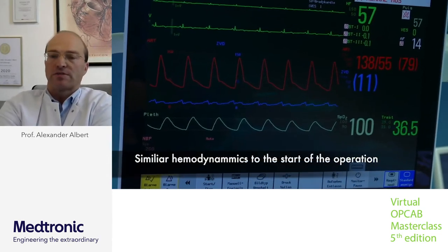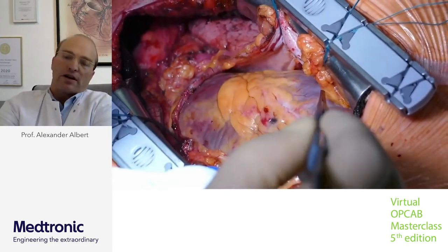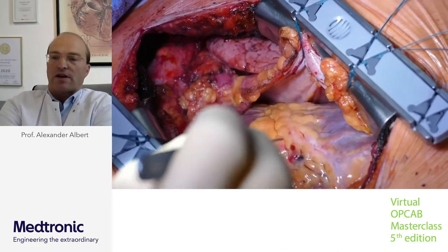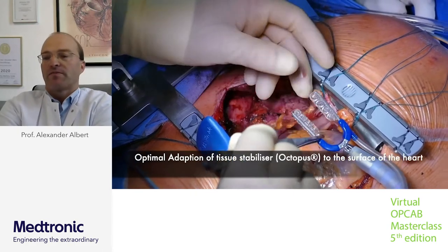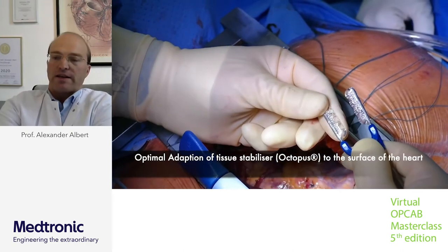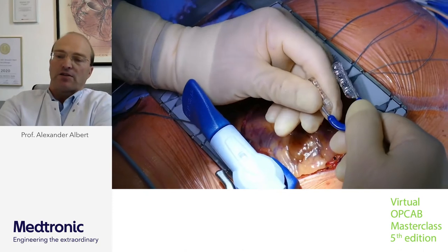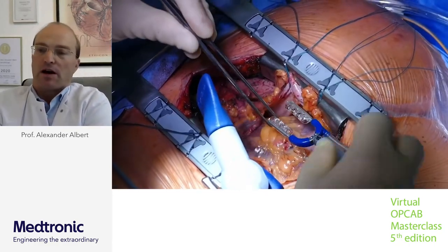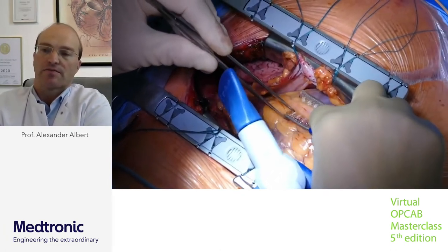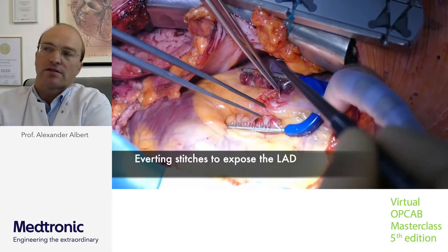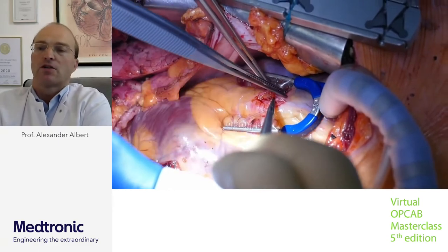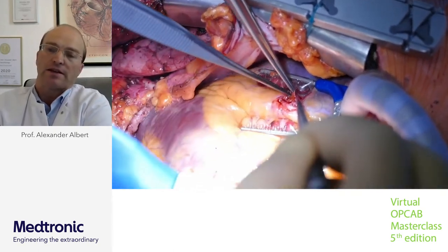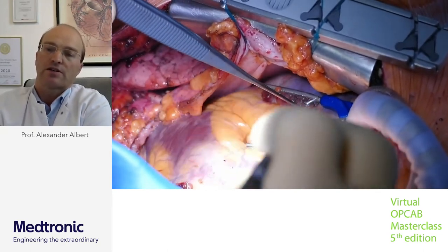Sometimes you need two sutures, sometimes you need ten. I study the anatomy, looking at the diagonal branches, and I will place the octopus between the diagonal branches. Before doing this, I adapt the octopus to the surface of the heart — the better you adapt the octopus, the less you have to press down the myocardium. It's always about reducing stress and manipulation to the heart; the heart should not feel that we are operating on it. I then perform the everting stitches from inside-outside, outside-inside, nicely exposing the LAD, which is important for shunt insertion and performing a good anastomosis.